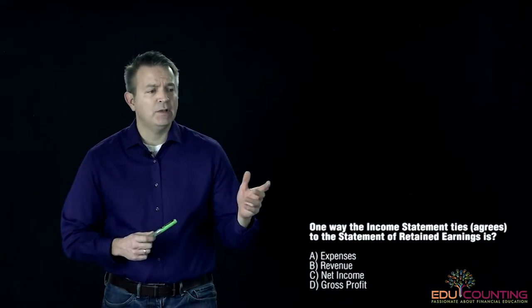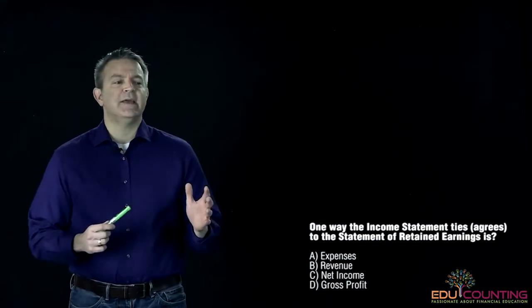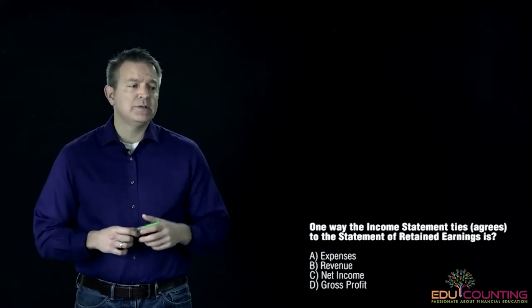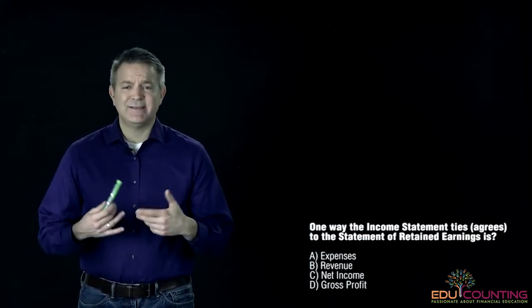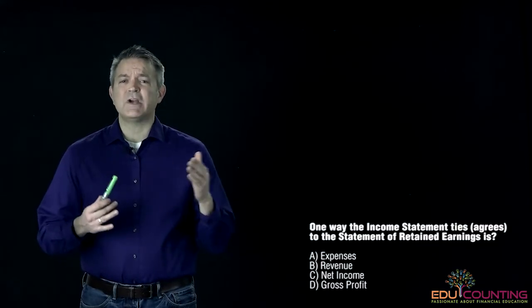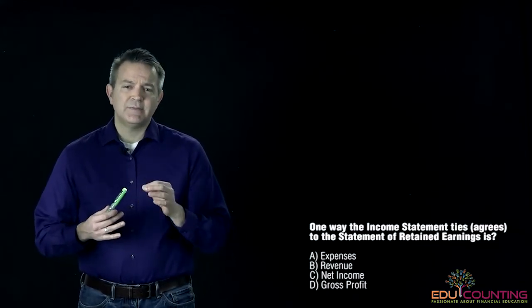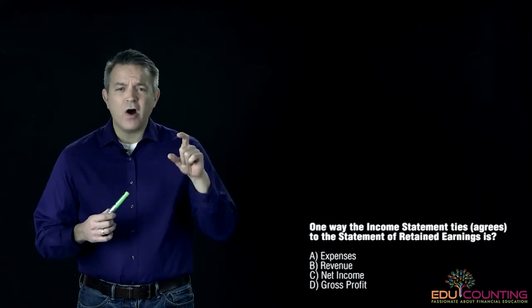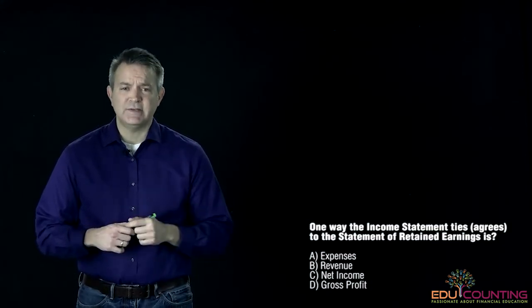In this question, we're going to look at one way that the income statement ties to the statement of retained earnings. Ties is just a fancy word of saying, where does it agree? So does the income statement agree to the statement of retained earnings, and where on the statement of retained earnings do you actually see that?